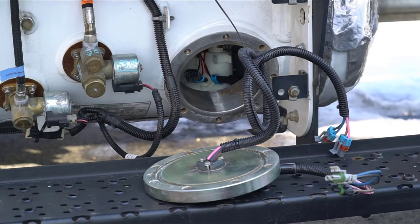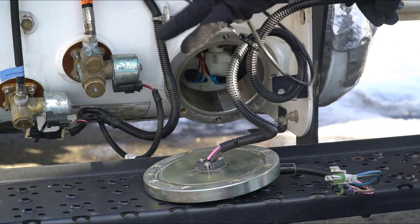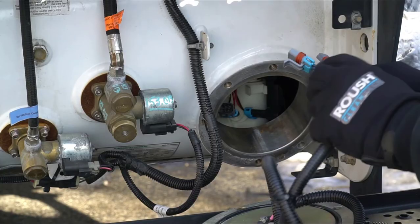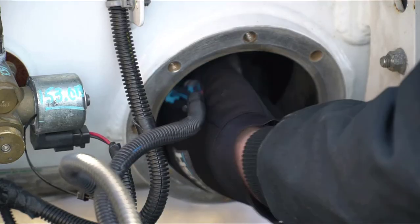Inspect the access flange mounting surface on the tank and remove any debris. Apply silicone O-ring lubricant to the new O-ring and place in the groove of the access flange. Connect the internal fuel pump connectors to the fuel pump housing. Verify solid connection.